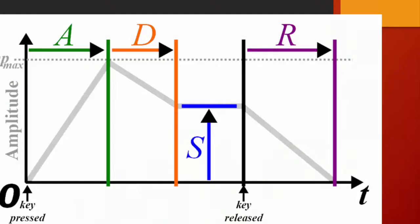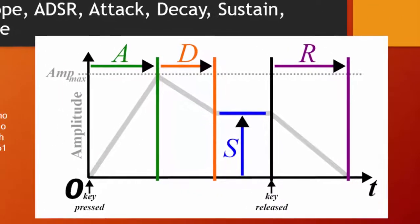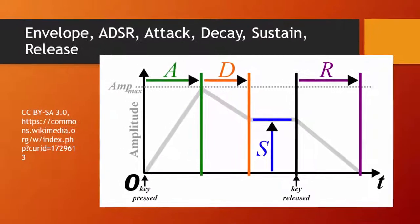An envelope is the way in which a sound changes over time. Most often, the envelope is given with four terms. One of the reasons that a trumpet sounds different than a clarinet is that they have different envelopes — the way in which notes are started, the attack, is different. A synthesizer can give the musician control over the envelope and thus imitate a live instrument or invent a new one.